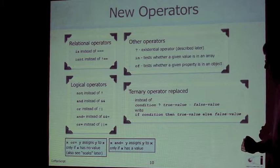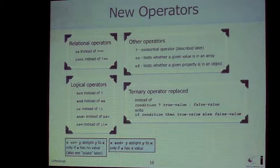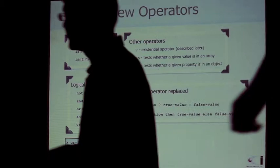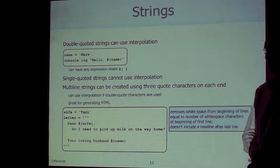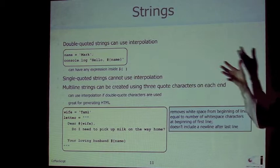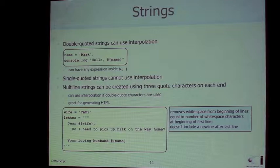The ternary operator is replaced — instead, you use an if statement, which works because all expressions in CoffeeScript return a value, so you can assign the result to a variable the same way you'd use a ternary expression. Strings can be in either single or double quotes, but if they're in double quotes you're allowed to use string interpolation: pound sign, curly braces, and any expression you want inside. It will evaluate that and put it in the middle of the string, so you don't have to do string concatenation yourself. With single quotes, string interpolation is not allowed.